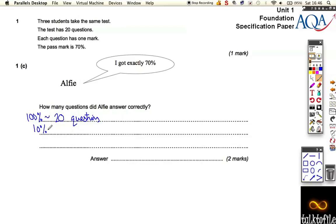So if you've got 10% of the paper right, you'll get two questions correct. So then all you've got to do for Alfie is do 10% times 7 to get to 70%. So you've got to do 2 times 7, which means you've got 14 questions correct.